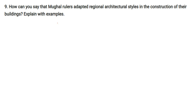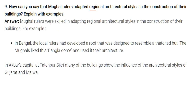Question: How did Mughal rulers adopt regional architectural styles in their buildings? Mughal rulers were skilled at adapting regional architectural styles. For instance, in Bengal, local rulers had developed a roof designed to resemble a thatched hut; the Mughals liked this Bangla dome and used it in their architecture. In Akbar's capital at Fatehpur Sikri, many of the buildings show the influence of the architectural styles of Gujarat and Malwa.